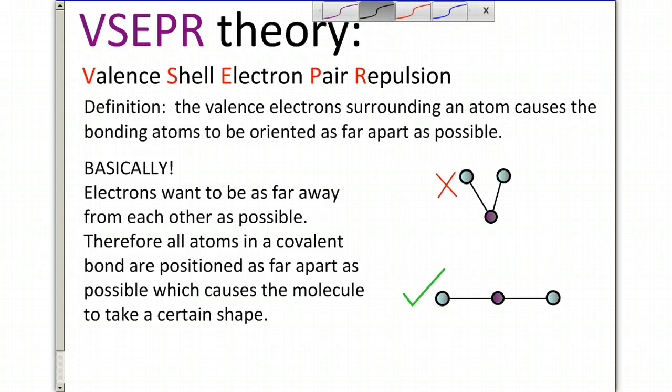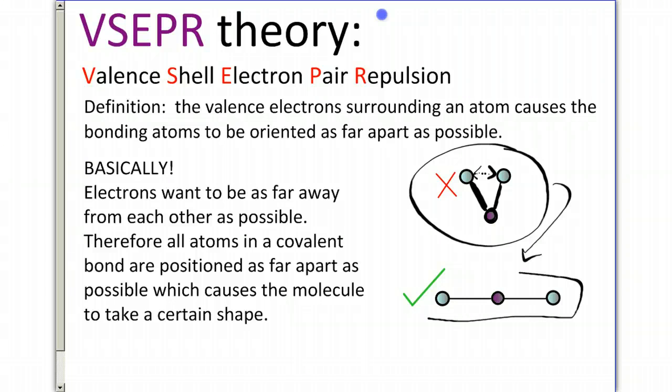If you look in the first example here, this wouldn't be correct because you have a center atom in the middle, and the two atoms that are bonded are awfully close to each other. They're actually repelling away from each other, and so you actually should have a drawing more like this one, where the atoms are as far away from each other as they could possibly be, actually forming a 180-degree angle or a linear shape.